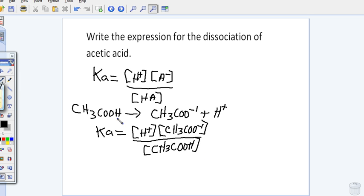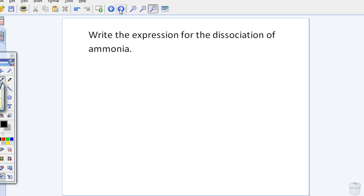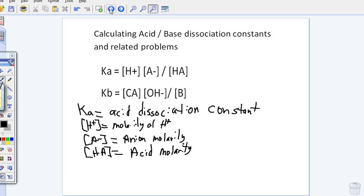That's how you write an expression. Let's look at one for a base. It says write the expression for the dissociation of ammonia. We need to go back to the general formula: Kb equals the conjugate acid concentration times the hydroxide concentration divided by the base concentration.